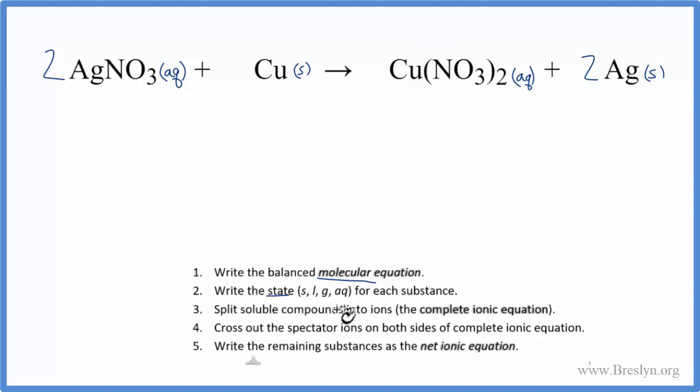So we've got the states, now we can split the soluble compounds into ions. So silver is always a one plus charge, and the nitrate, NO3, it's a polyatomic ion, it always has a one minus charge. Copper, it's not bonded to anything, it's just a solid metal. It doesn't have a charge, it's neutral.